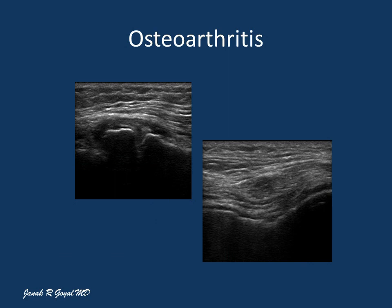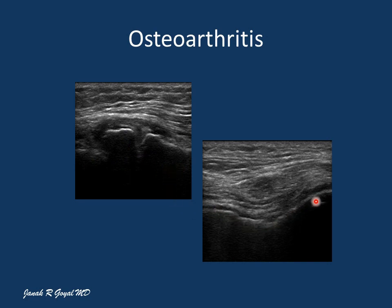Here is a patient with osteoarthritis of the knee showing hyperechoic projections from the femoral and tibial condyles, irregularity of the condylar surface, and marked loss of condylar cartilage.